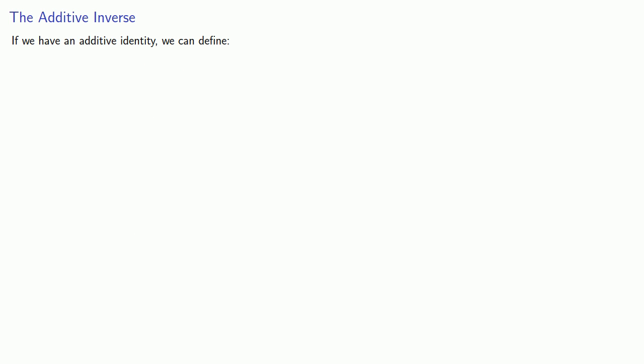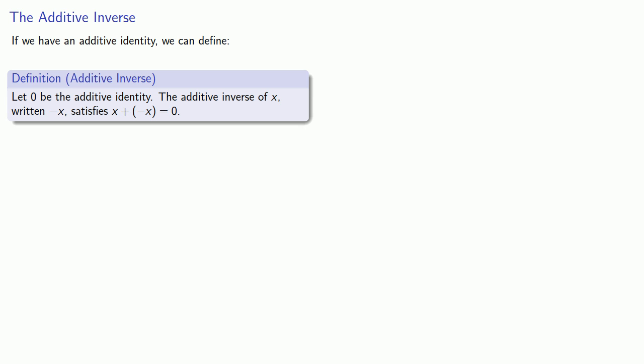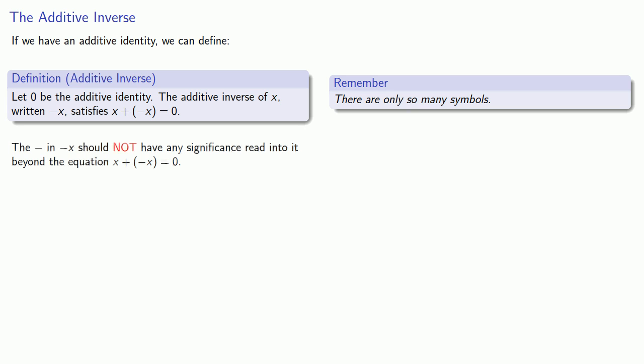The existence of an additive identity is very useful because it gives us a goal. If we have an additive identity, we can define the additive inverse. And we'll write it this way. Let zero be the additive identity. The additive inverse of x, written this way, satisfies x plus the additive inverse is equal to zero. Now, at this point, it's useful to keep in mind two important ideas. First of all, there are only so many symbols. And so the symbol here when we write the additive inverse of x should not have any significance read into it beyond the equation x plus the additive inverse of x is equal to zero.